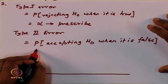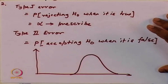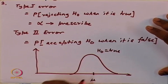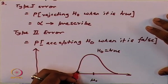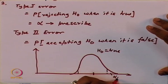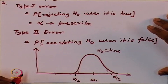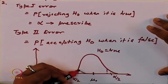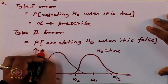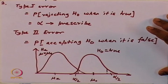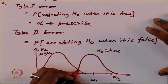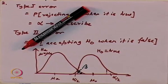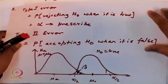Let us draw this. This is your H0 equal to true, this is your mean corresponding to mu0. For a two-tailed test of hypothesis, you have alpha by 2 on each side. Now let us say your sample gives you a mean of mu A, which is different. Then the distribution for the alternative hypothesis, which is mu equal to mu A distinct from mu0 — this area in this part of the curve you call as beta, and this is your probability of accepting H0 when it is false.